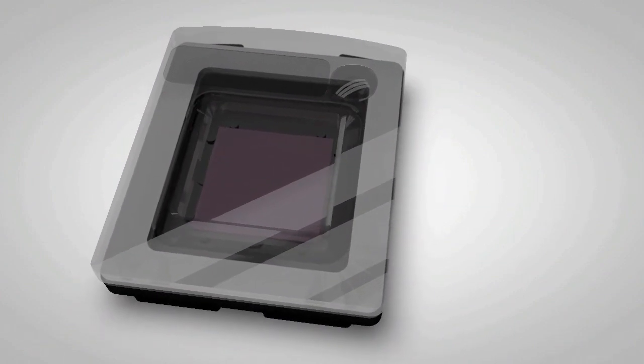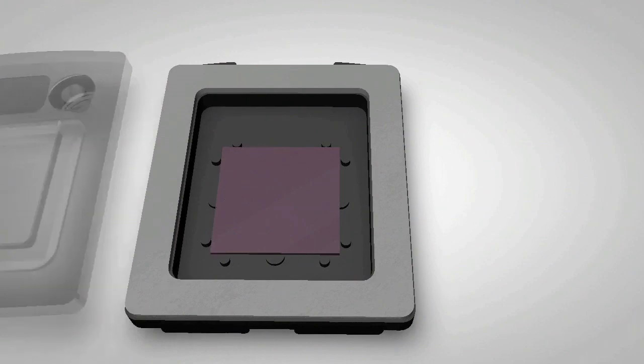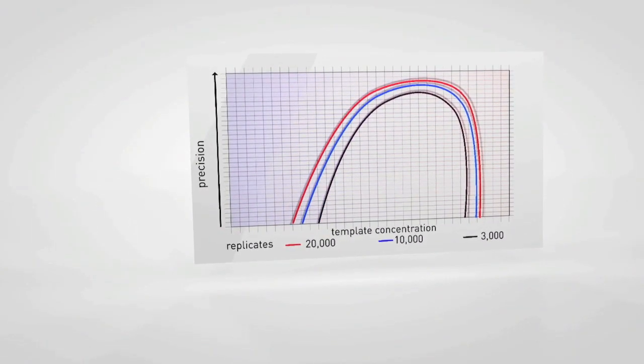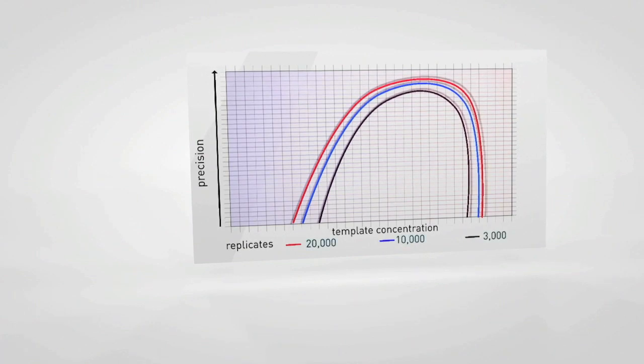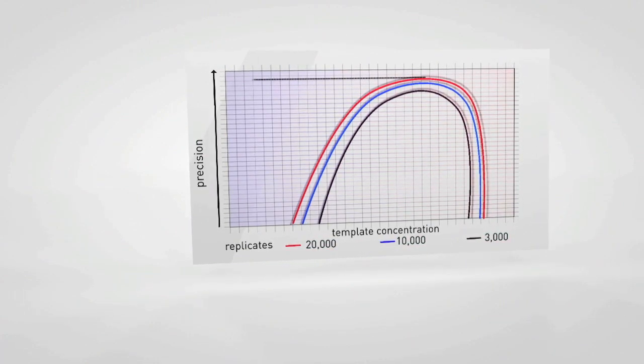Digital PCR for absolute quantification is straightforward. Just keep in mind these three simple considerations. You'll need to determine the degree of precision required around the measurement. This is determined by the total number of reaction replicates run. The greater the replicates, the higher the achievable precision.